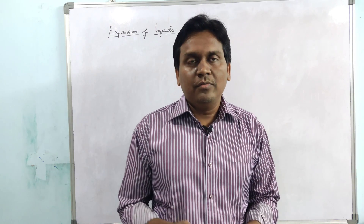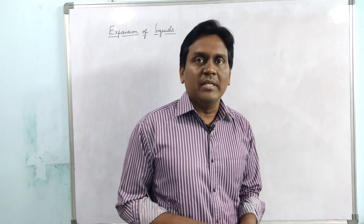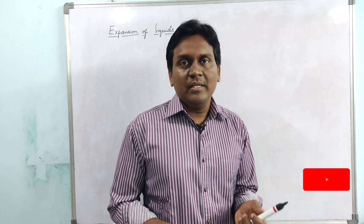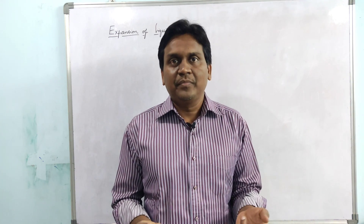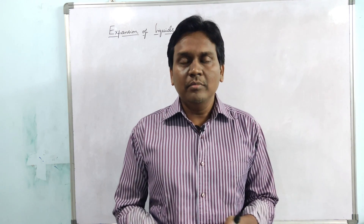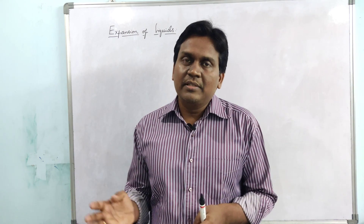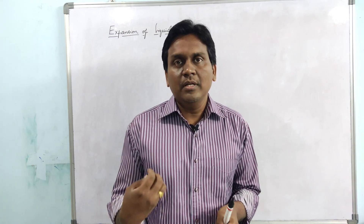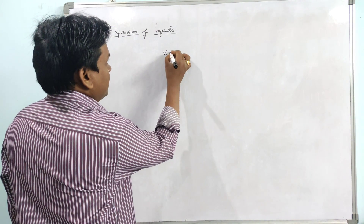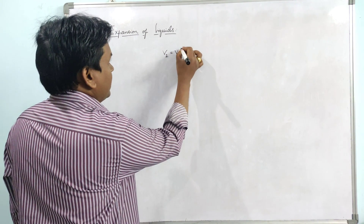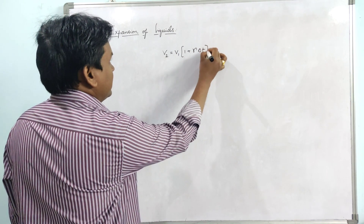Thermal expansion of liquids is identical to the volume expansion in solids. The reason is that liquids don't have a length or area — they directly have volume. So the expansion of liquids is identical to the volume expansion in solids. The volume expansion formula is: V2 = V1(1 + γ · ΔT).